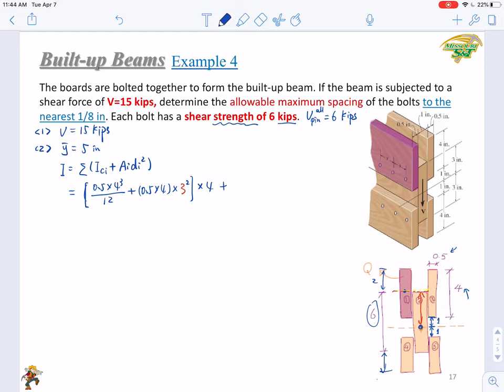Plus 1 times 6 cubed over 12 plus 0. And the central, the I number will calculate, it will be 100.7 inch to the fourth.